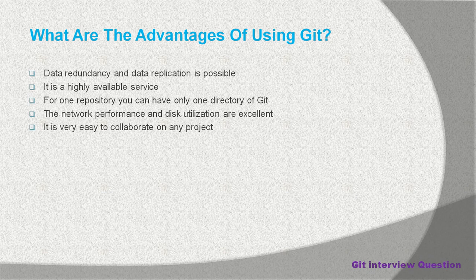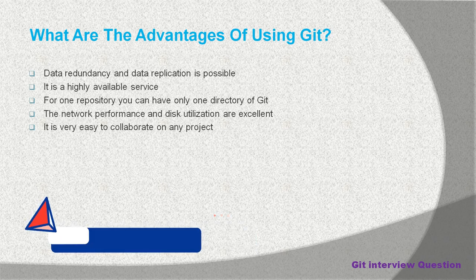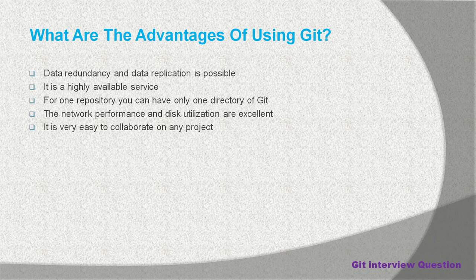It is very easy to collaborate on any project. Git is a distributed SCM tool where many people can work together on a single project. They can clone the repository on their local machine, make changes, submit those changes to their branch, and raise a pull request so that the project owner can review the changes. The owner can provide review comments if modifications are needed, and once they're satisfied they can approve the pull request and you can merge your branch into the target branch.